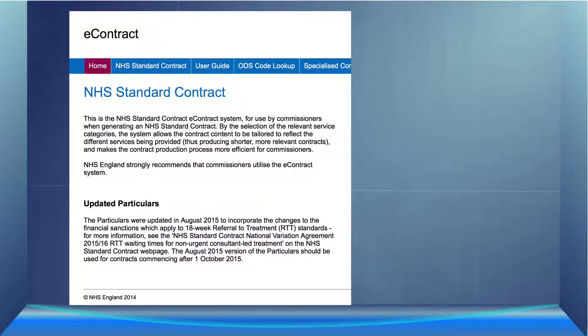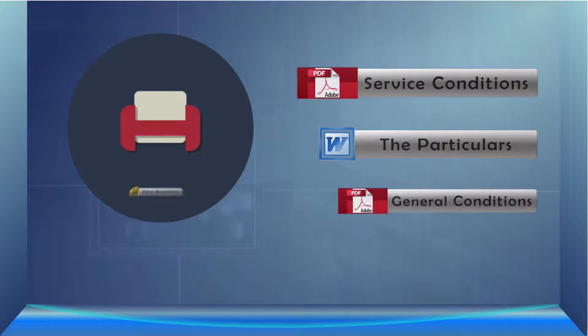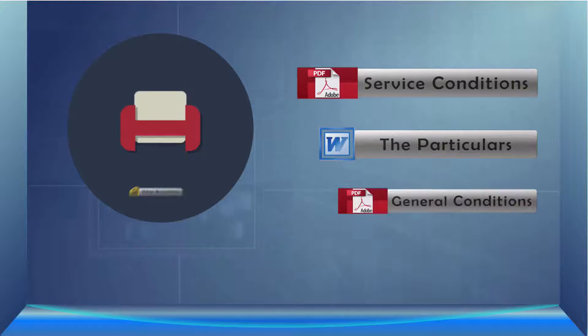Ultimately, what you need to remember is that the e-contract system produces a version of the service conditions and a mostly complete version of the particulars. The final version of the contract will also include the general conditions and may well include supporting papers. These in combination will make up the final version of the contract, which will need to be stored locally after contract signature. In this video, we've covered the technical guidance, the sanctions reporting template, and the e-contract documentation. In the next video, we'll cover the remaining documents on the site. I look forward to seeing you there.